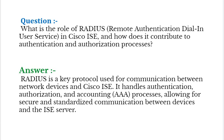Our next interview question is: what is the role of RADIUS (Remote Authentication Dial-In User Service) in CISCO ISE, and how does it contribute to authentication and authorization processes? RADIUS is a key protocol used for communication between network devices and CISCO ISE. It handles Authentication, Authorization, and Accounting (AAA) processes, allowing for secure and standardized communication between devices and the ISE server.